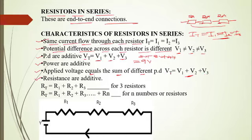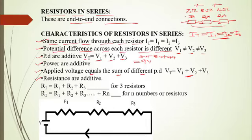Additionally, the total combined effective resistance is found by summing all resistors together. For instance, if the first resistor is 2 ohms, the second is 3 ohms, and the third is 4 ohms, you add 2 + 3 + 4 = 9 ohms as the total effective combined resistance. When you have three or more resistors connected in series, simply add their individual resistances. If there are more than three, you can add as many as needed.